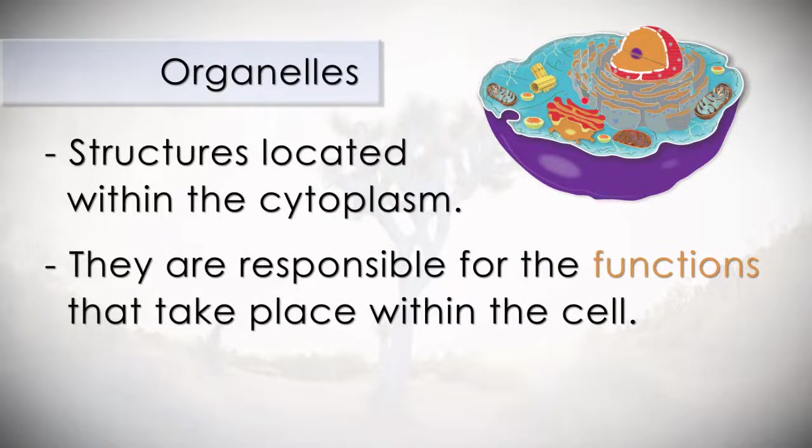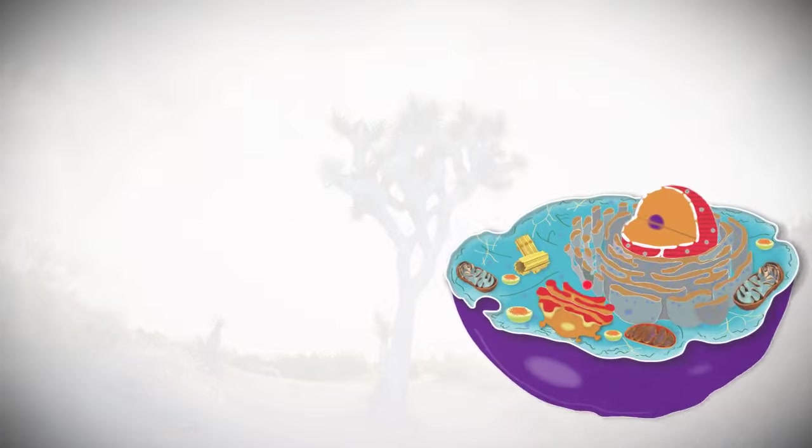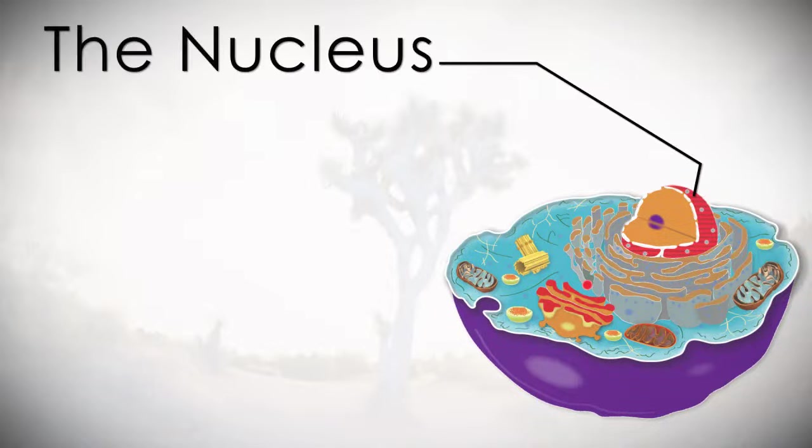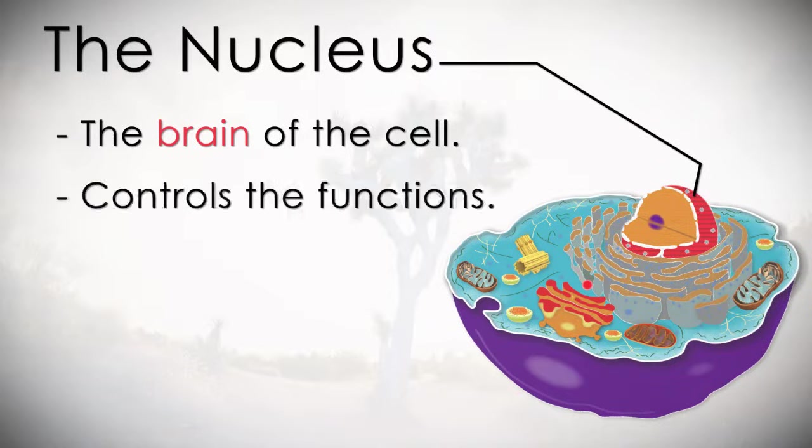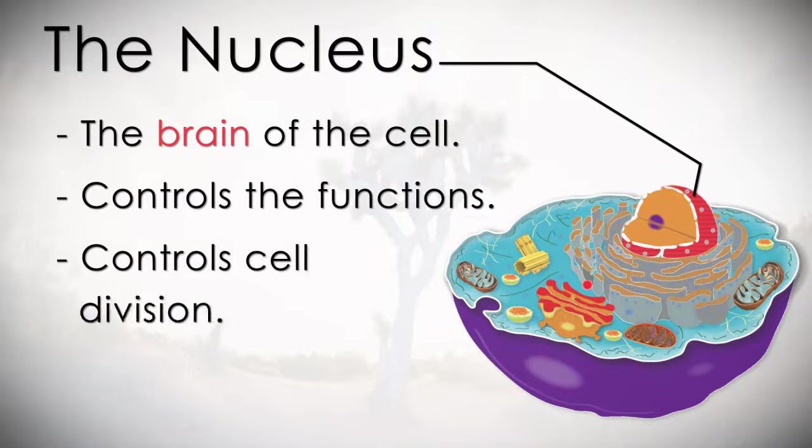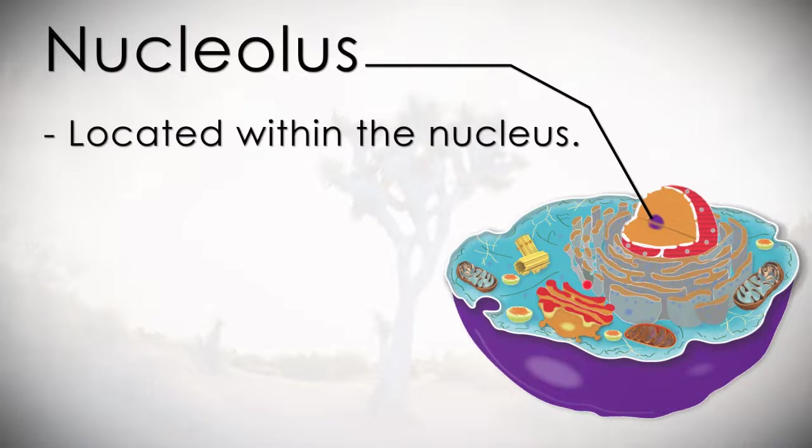Here we'll go over the organelles and describe the role and function of each. The nucleus is the brain of the cell. It controls many functions of the cell and cell division. The nucleolus is located within the nucleus and is important in cell reproduction.